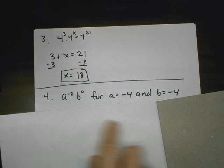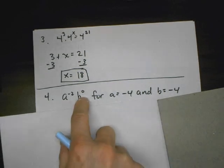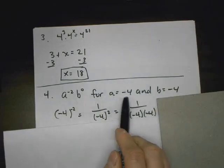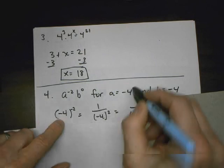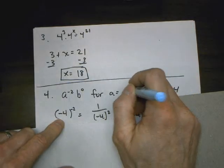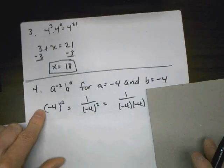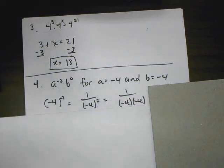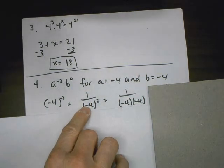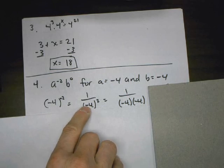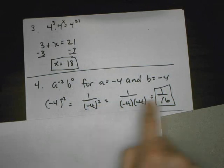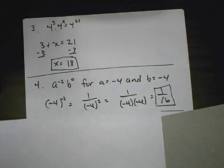Number 4: evaluate this expression if a is negative 4 and b is negative 4. b to the 0 power is just 1, so we're only worried about a to the negative 2nd power. Plug in negative 4 in parentheses — always use parentheses when substituting a negative number. To the negative 2nd power means flip it upside down and it becomes positive 2nd power, but the negative coefficient stays. Since there are 2 negatives, the answer becomes positive. If the exponent were 3, it would be negative — that's why parentheses matter.